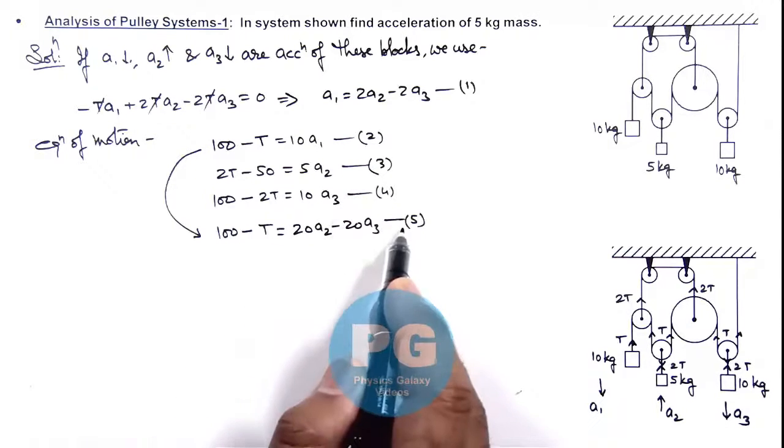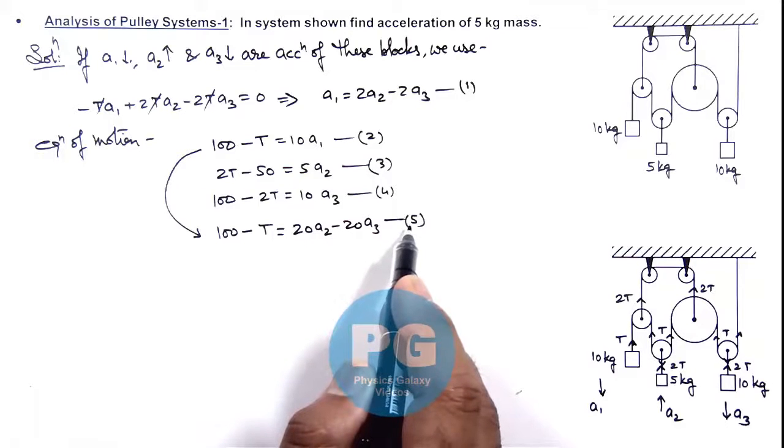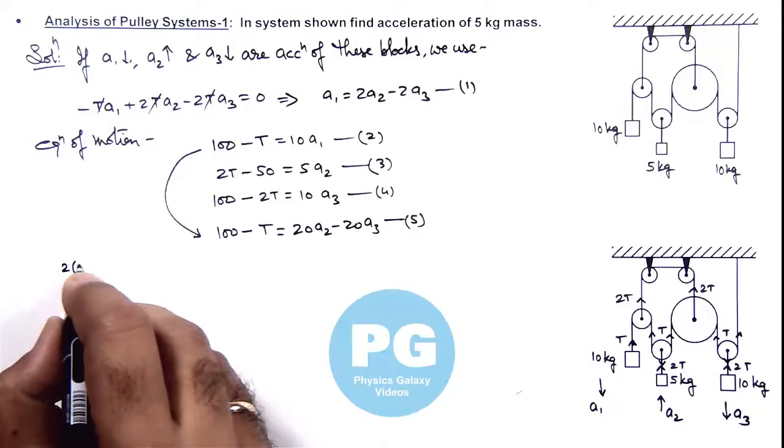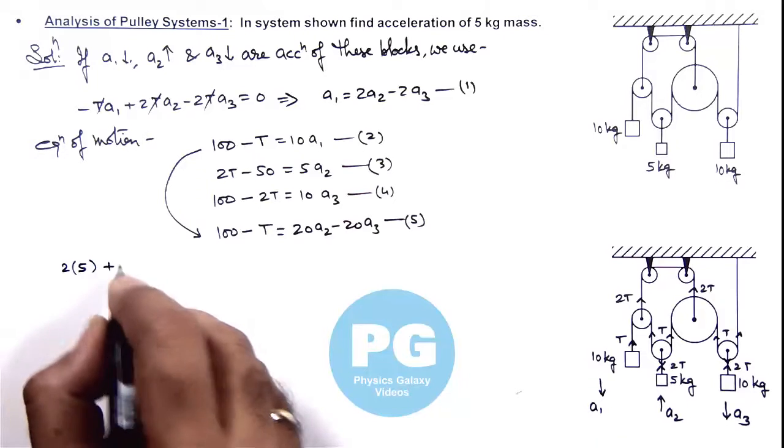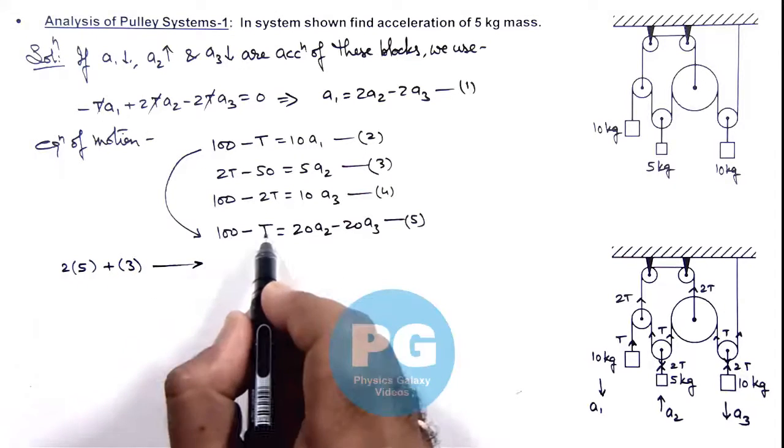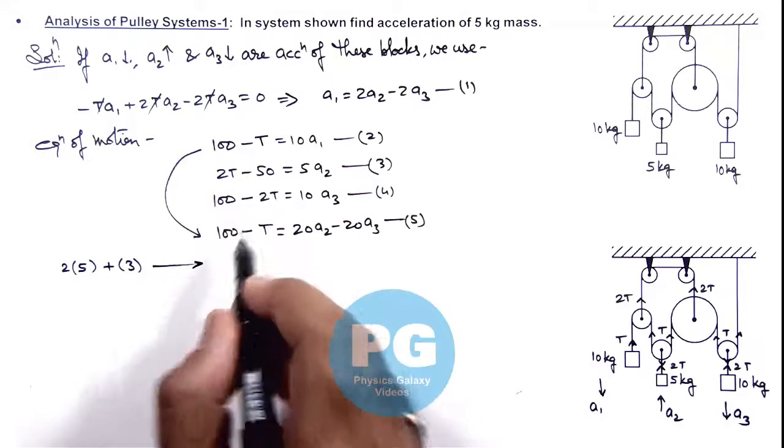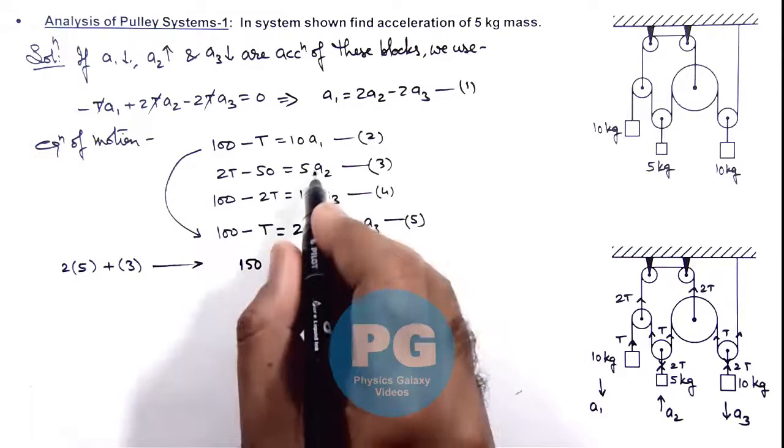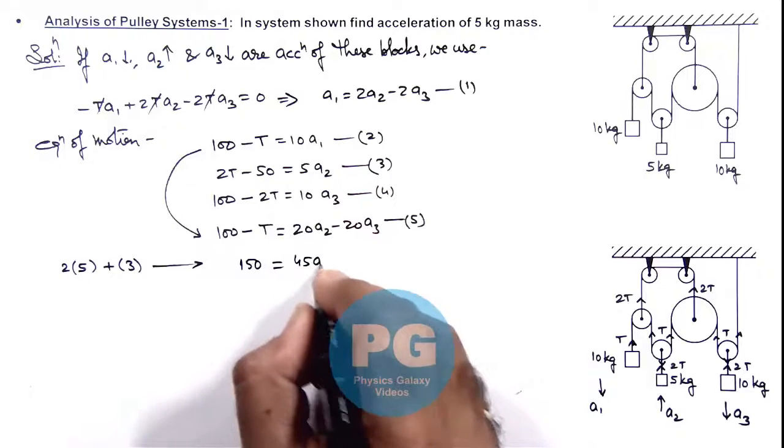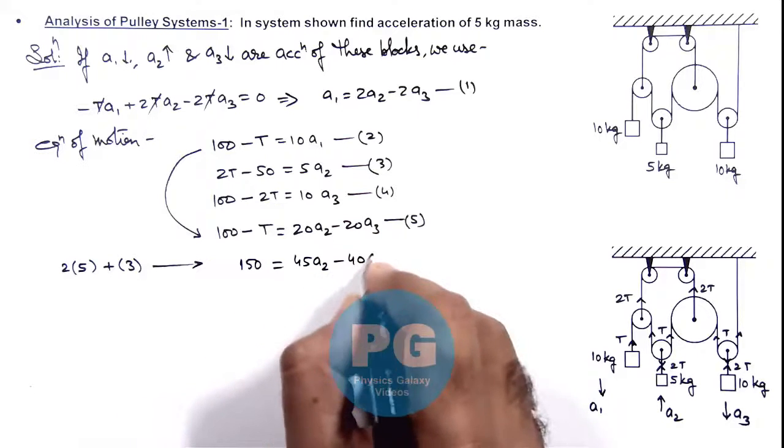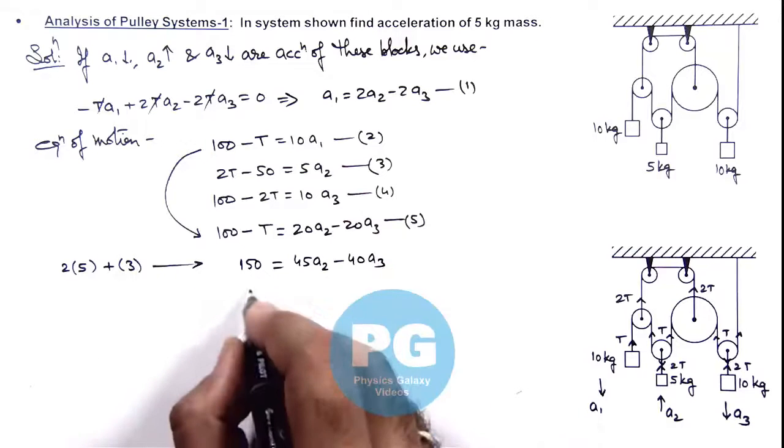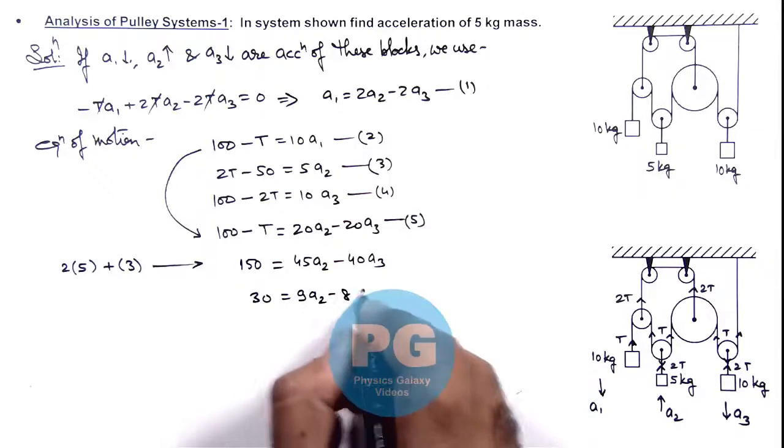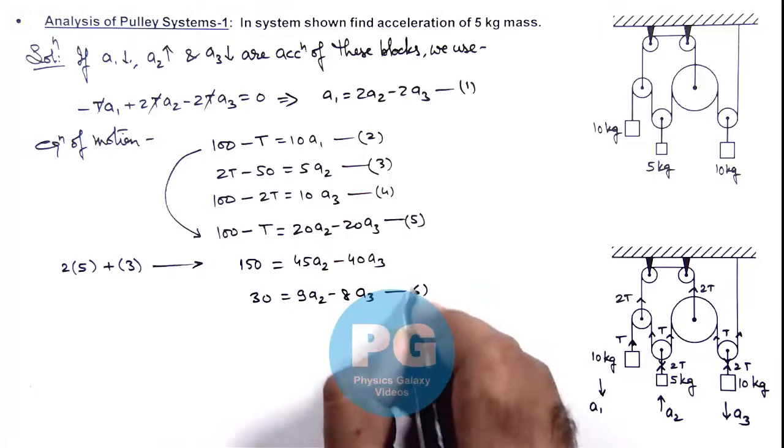From equations 3 and 5, if we multiply equation 5 by 2 and add it to equation 3, we get: 200 minus 2T plus 2T minus 50 equals 150 on the left side. On the right side: 40a_y2 plus 5a_y2 minus 40a_y3 equals 45a_y2 minus 40a_y3. Simplifying gives 30 equals 9a_y2 minus 8a_y3. This is equation 6.